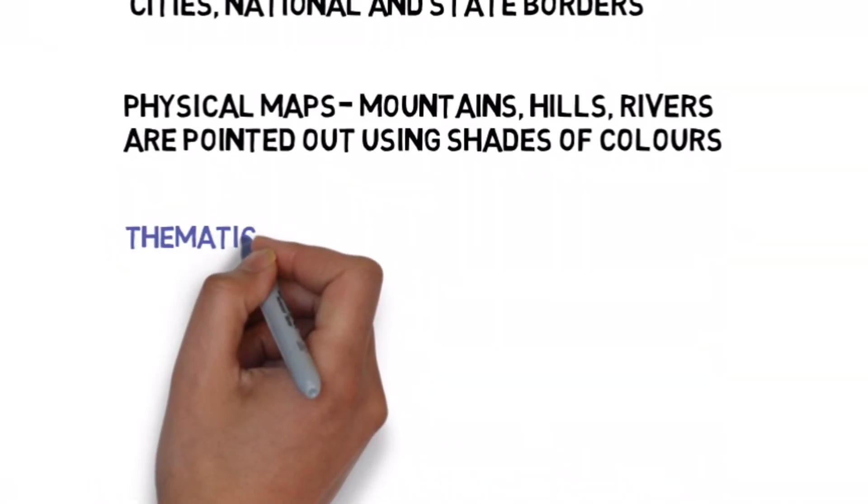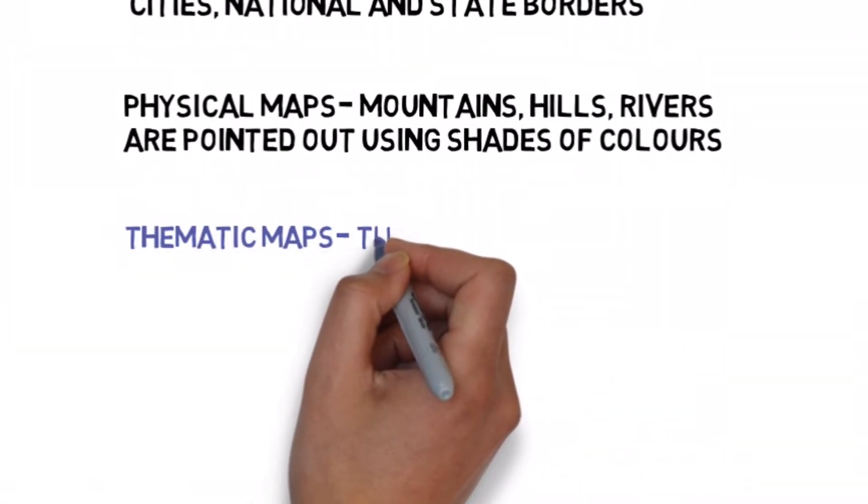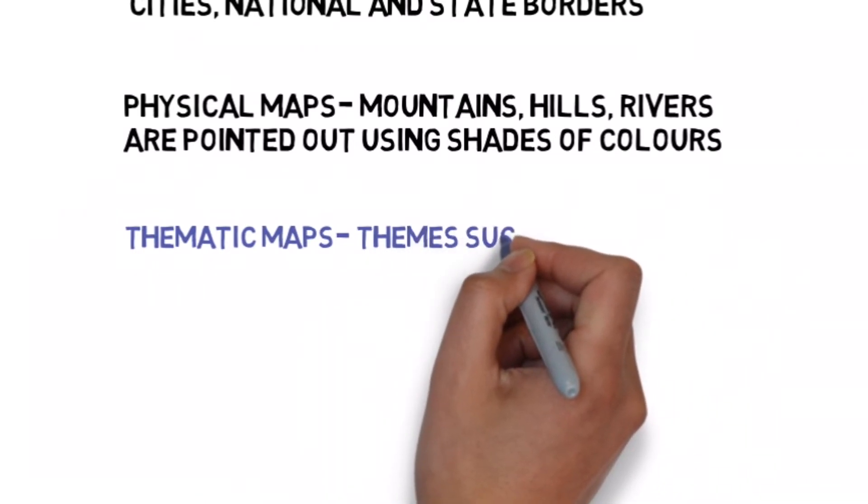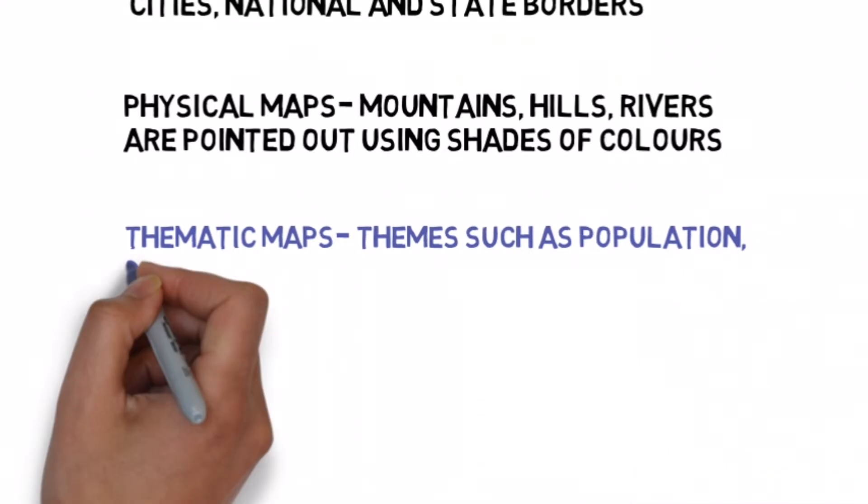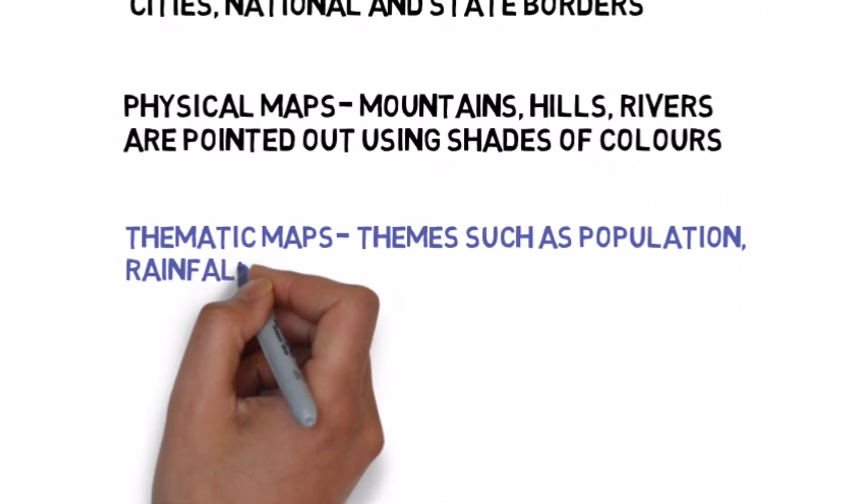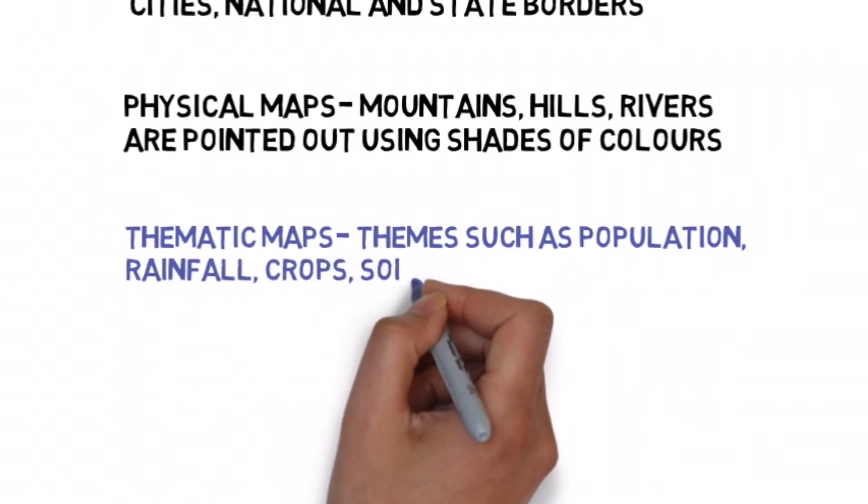The third kind is the thematic map. Thematic maps focus on different themes such as population of a place or a country, or the crops grown, or the distribution of rainfall across a particular place. So they focus on, they pick up different themes and they put a map on that particular theme.